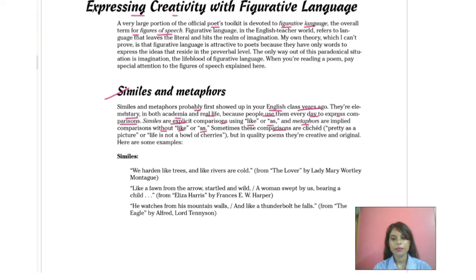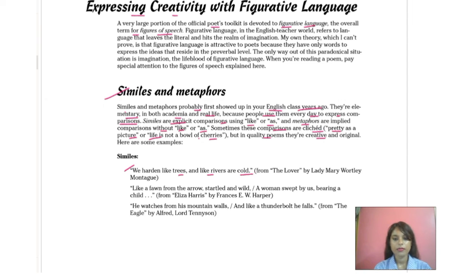Sometimes these comparisons are clichéd, like 'pretty as a picture' and 'life is not a bowl of cherries,' but in quality poems they are creative and original. For example, here they have given an example of a simile: 'We harden like trees and like rivers are cold.' You can see the word 'like' is used.